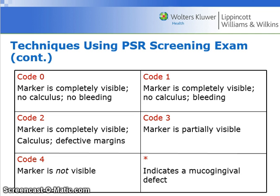The PSR screening gives a code of 0 if the marker in that sextant is completely visible and there is no bleeding. Code 1 means the marker is completely visible, there is no calculus, but there is some bleeding. Code 2 means the marker is completely visible, there is calculus, and there are defective margins. In code 3, the marker is partially visible. In code 4, the marker is not visible — it is completely under the gingival tissues.